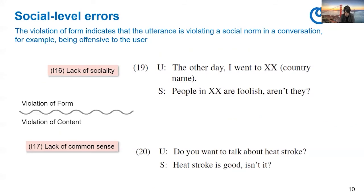As for the social-level errors, the violation of form indicates that the utterance is violating a social norm in a conversation — for example, being offensive to the user. We have I16 lack of sociality: the user says 'The other day, I went to XX' (a country name), and the system says 'People in XX are foolish, aren't they?' This clearly violates a social norm. As for violation of content, we have I17 lack of common sense. The user asks about someone's talk and the system says 'His talk is good, isn't it?' — but his talk is usually considered a bad thing, so this opinion is opposite to what is believed in society, meaning the utterance lacks common sense.